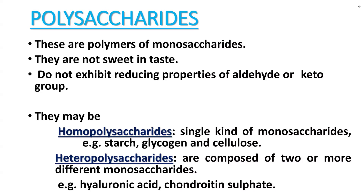Examples of homopolysaccharides include starch, glycogen, and cellulose. These are all formed by a single monosaccharide — glucose. It is a repeating unit of glucose that makes up the homopolysaccharides, using the same repeating units to produce them.